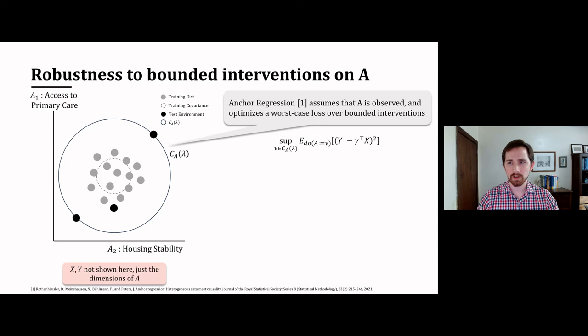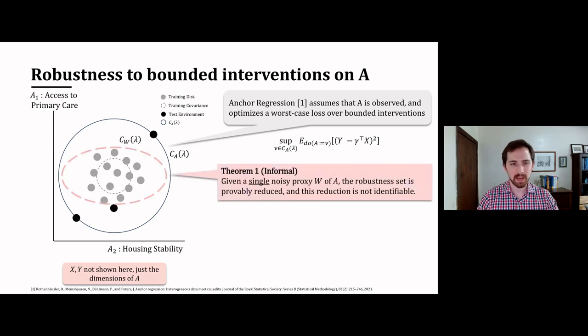Anchor regression, which is prior work, assumes that A is observed and shows how to optimize a worst case loss of the following form over a particular robustness set, which is this CA lambda.